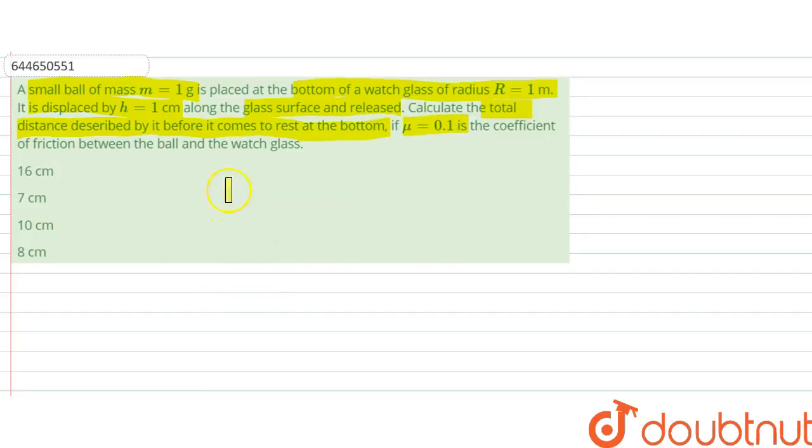If mu is equal to 0.1, the coefficient of friction between the ball and the watch glass. So let us say that this is the watch glass, and this was here originally, and now it is displaced to this position, that is 1 centimeter.